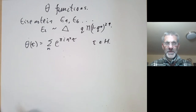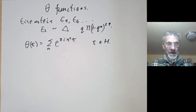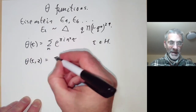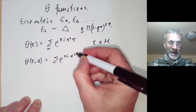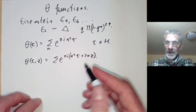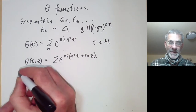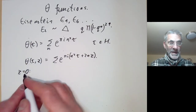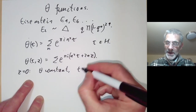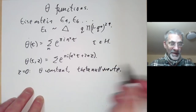The notation of theta functions is really a bit of a mess and there are several other related functions also called theta functions. You will often find the function theta of tau and z, which is the sum of e to the pi i n squared tau plus 2nz. The theta function we're looking at is the special case when z equals zero, sometimes called theta constants and also sometimes called theta null values.